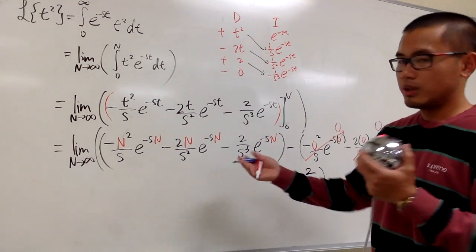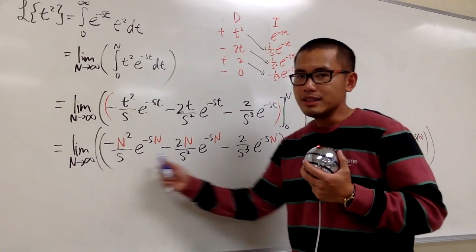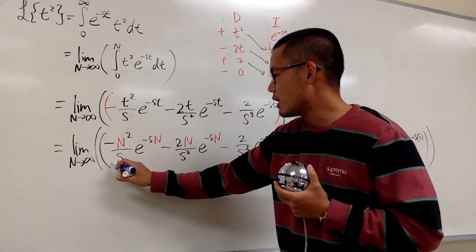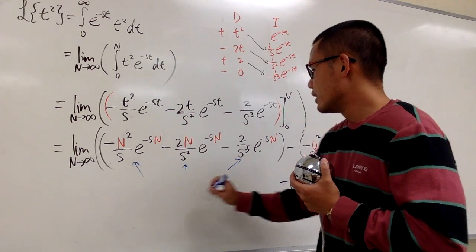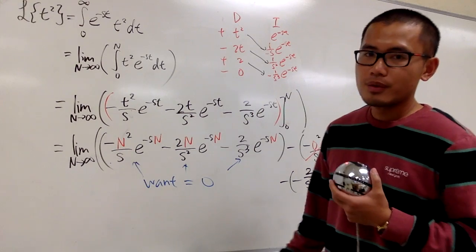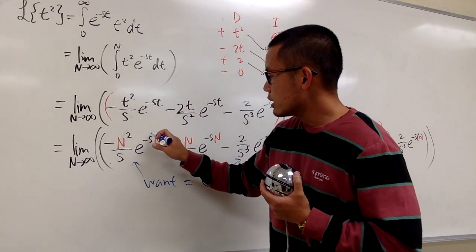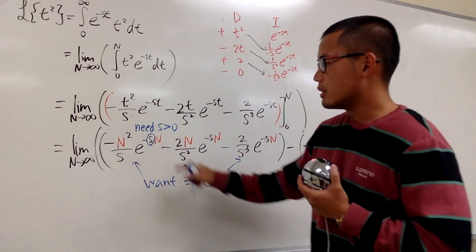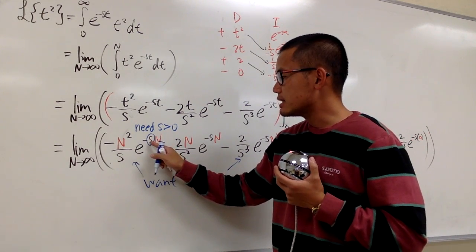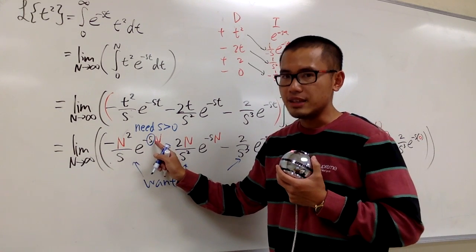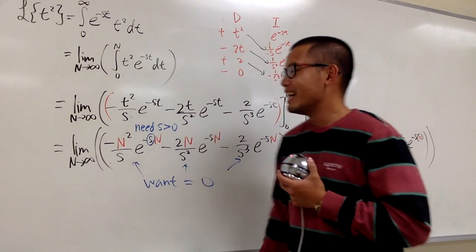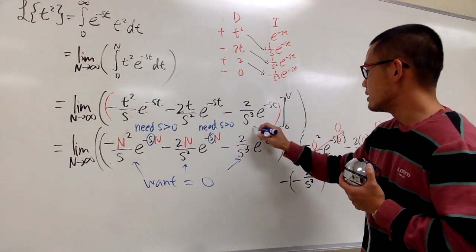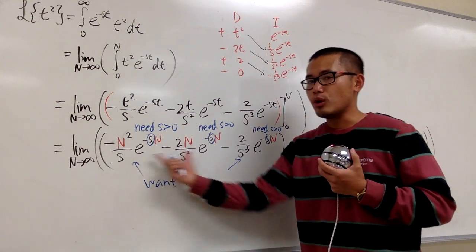Now let's look at the first part and take the limit as N goes to infinity. We want those three terms to all be 0. As long as s is greater than 0, then negative s times N gives negative infinity as N goes to infinity, and e to the negative infinity kills each of those terms. So as long as s is greater than 0, all three terms in the first part go to 0.